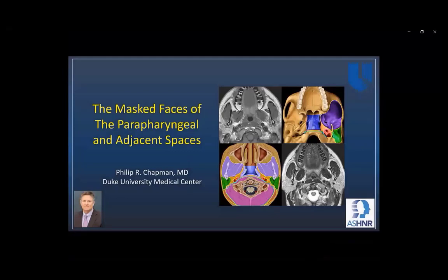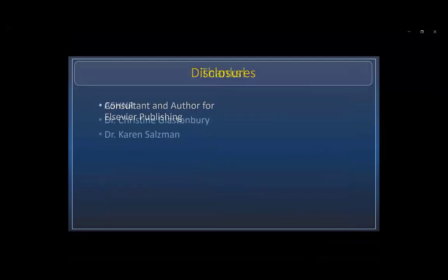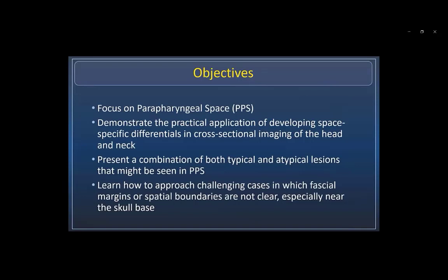Hi, my name is Philip Chapman. I'm at Duke University Medical Center. The title of this talk is 'The Masked Faces of the Parapharyngeal and Adjacent Spaces.' In terms of disclosures, I'm a consultant and author for Elsevier Publishing. I'd like to thank the ASHNR, especially Dr. Christine Glastonbury, and thank Karen Salzman for sharing this platform. We're going to focus on the parapharyngeal space and some adjacent spaces, demonstrate practical application of space-specific differentials on cross-sectional imaging, present typical and atypical lesions, and learn how to approach challenging cases in which fascial margins or spatial boundaries are not clear, especially near the skull base.